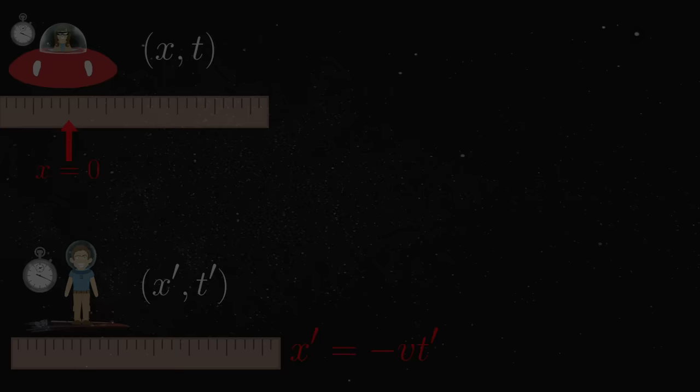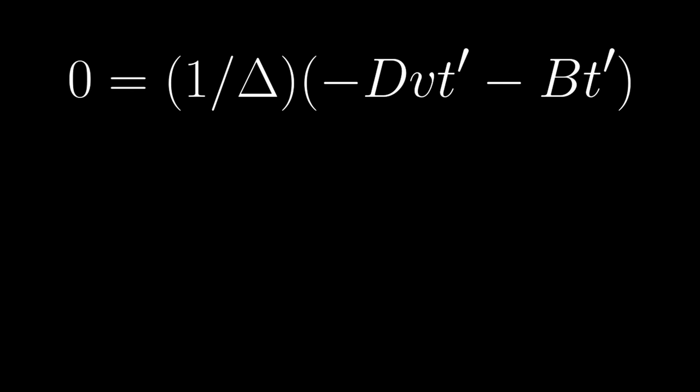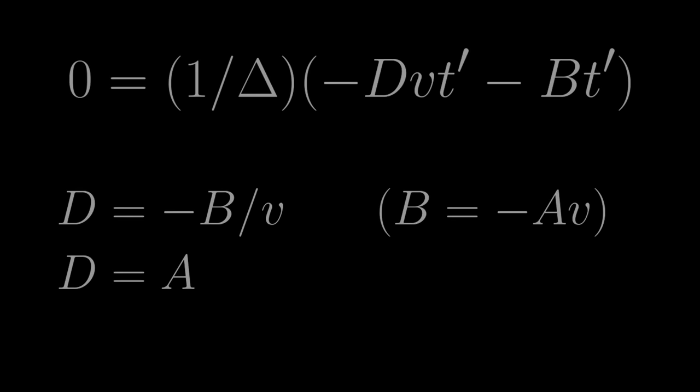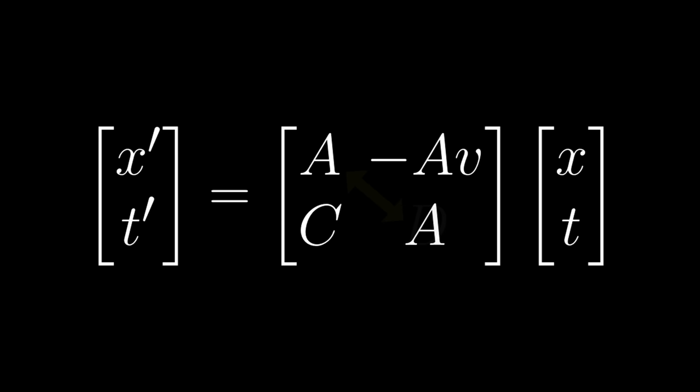0 is equal to 1 over delta times the quantity of negative dvt prime minus bt prime. A little bit more algebra, and we soon find that d is equal to negative b over v, which is equal to a. In other words, the two elements along the main diagonal must be the same. The transformation from Annie's frame of reference into Jim's can therefore be written as follows.